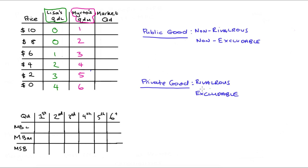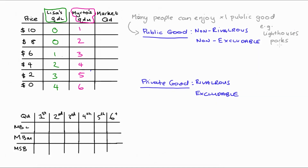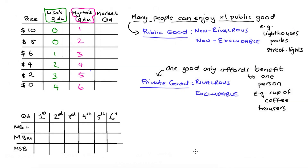The difference between them, as a result of these features, is that if you have one public good, many people can enjoy some benefit from that one good. So for instance, one lighthouse, one park, one streetlight — many people can gain benefit from those goods. In contrast, a private good is really associated with the benefit afforded just to the consumer of that good. If I drink a coffee or buy a pair of trousers, the marginal benefit is really just my own.